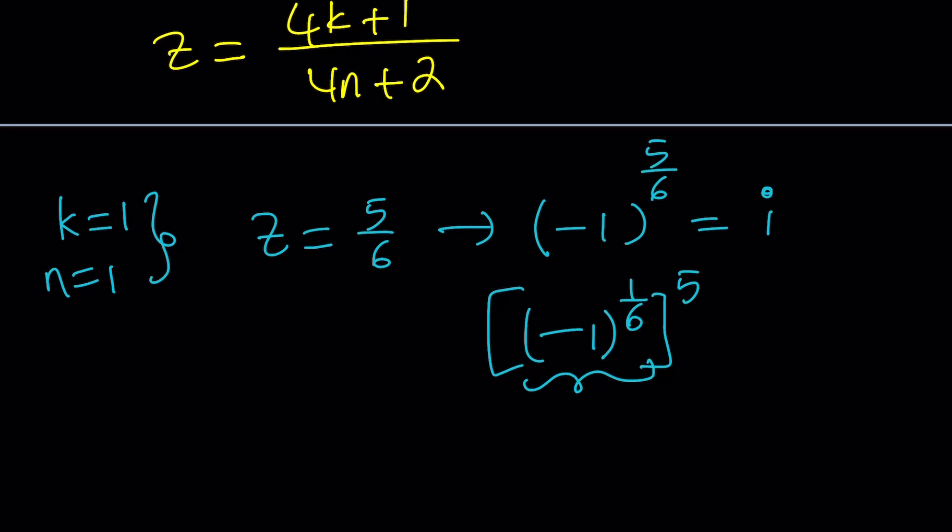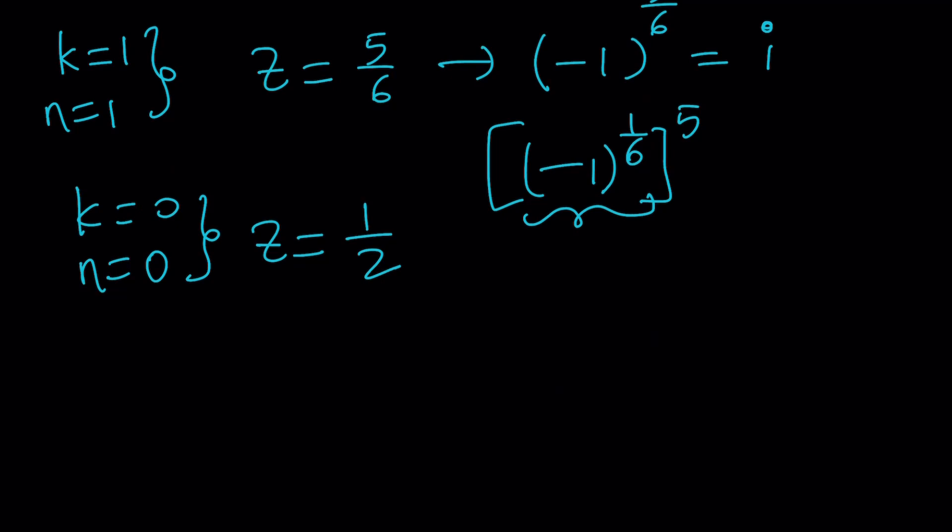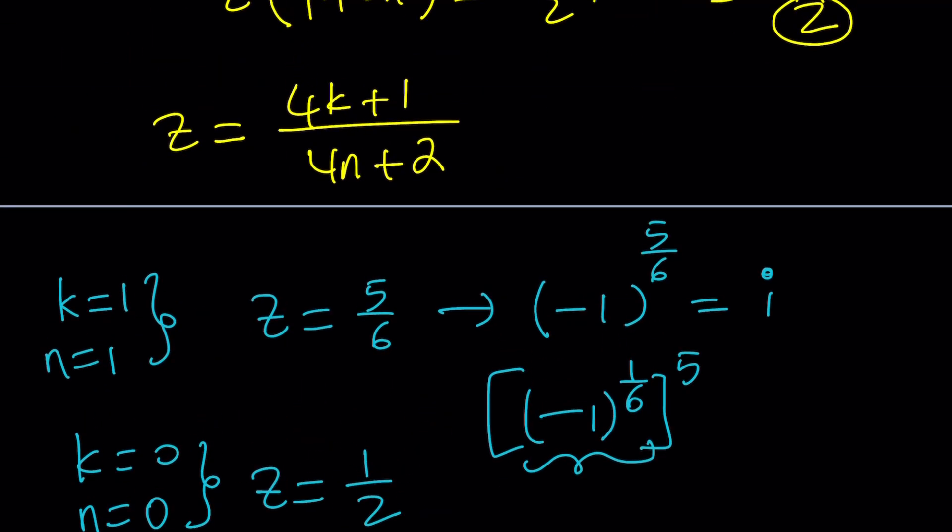Or let's use another value. What happens if k is 0 and n is 0 at the same time? That's going to give us something interesting because z is going to be 1 half. And now, we're getting something super simple. Negative 1 to the power 1 half is i. Is that correct? And the answer is yes. Because remember how we defined i at the very beginning. i squared is negative 1. So, i is actually one of the roots of negative 1. The other one is negative i. And in this case, we get a solution.